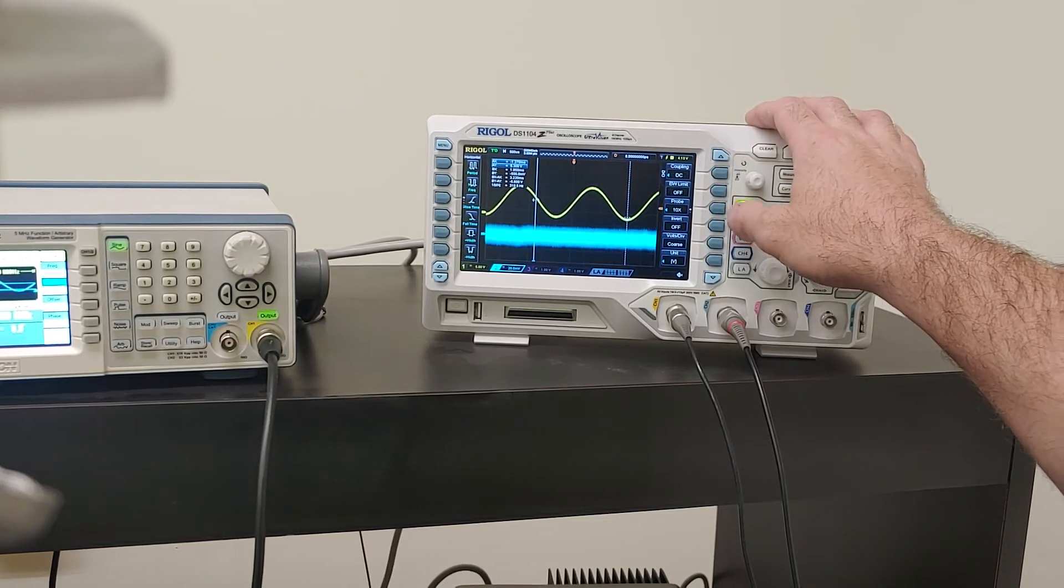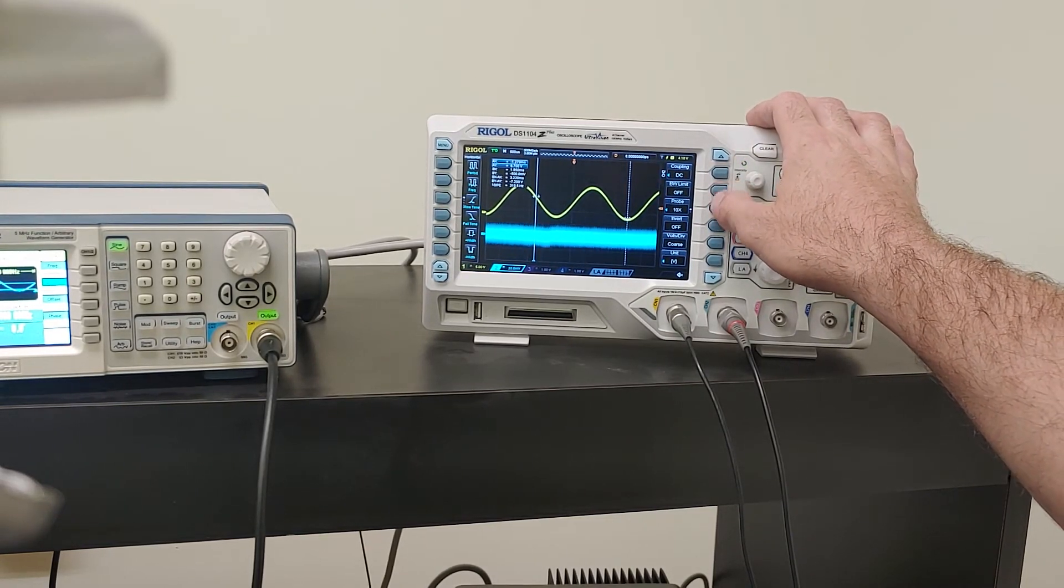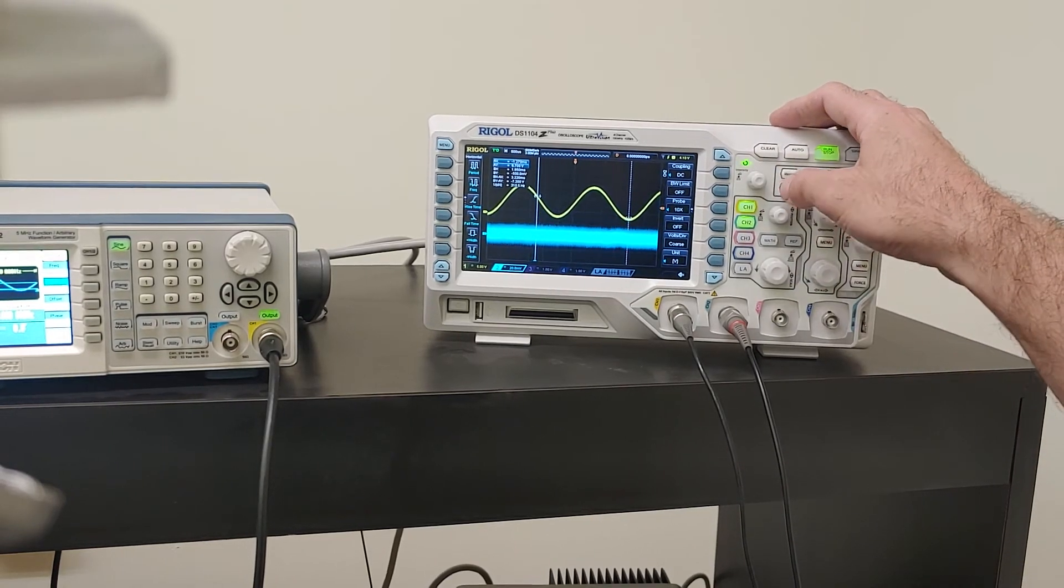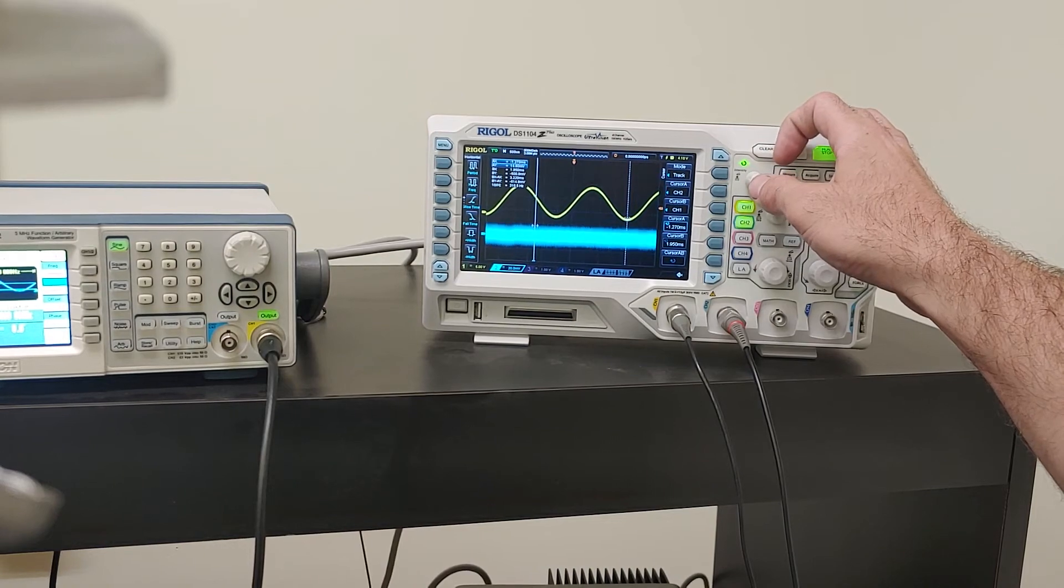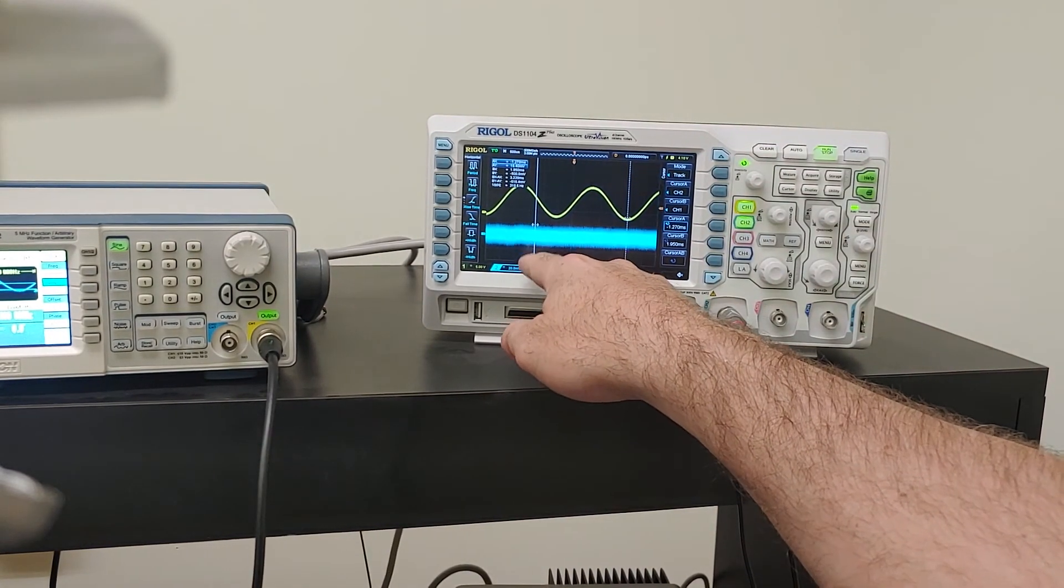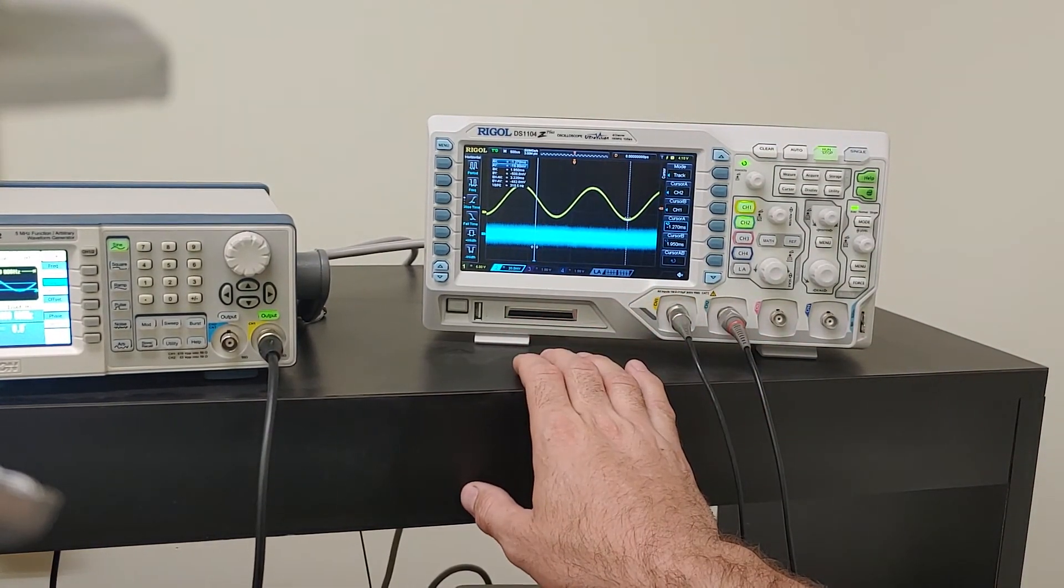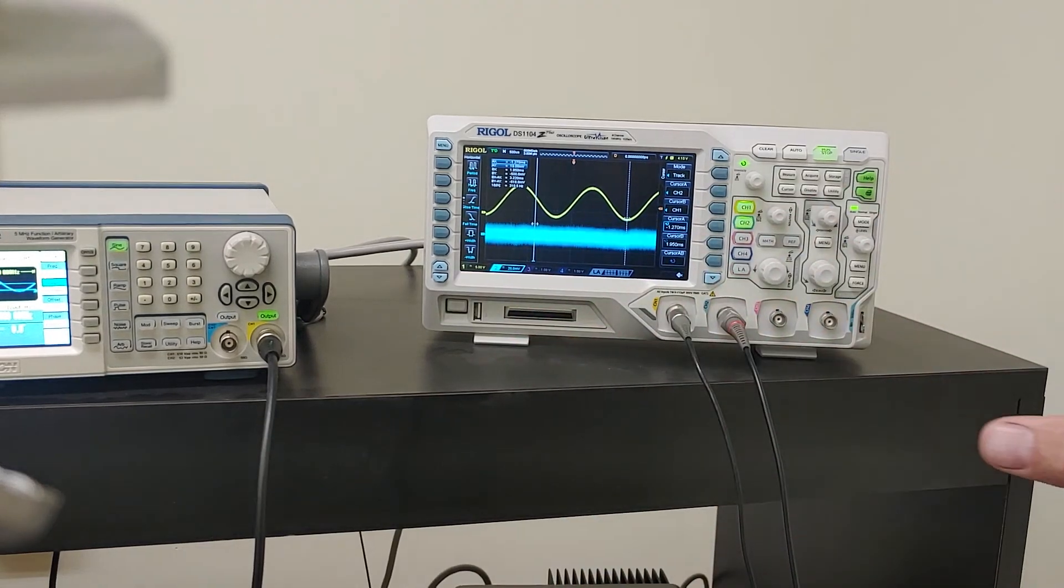I could set it to choose channel 2 and set my, once again, go back to cursor. And so it set this channel to channel 2. And now it's sitting here bouncing up and down because it doesn't know what to measure on this noisy signal. So that's the cursor tool.